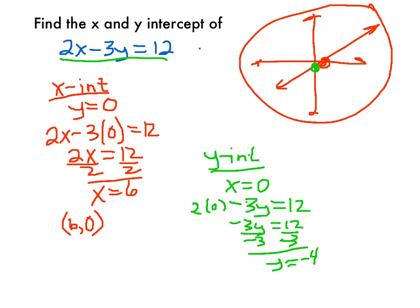So our coordinate here, our x was 0, our y was negative 4, so my y-intercept is (0, -4), and my x-intercept is (6, 0).